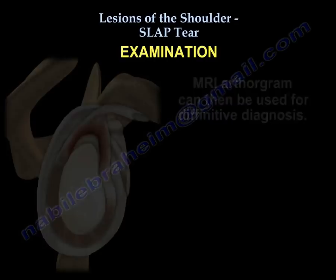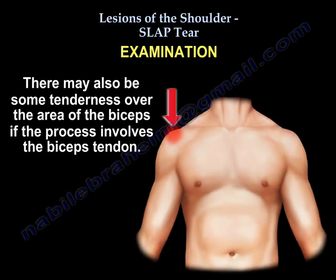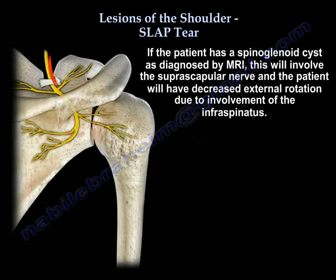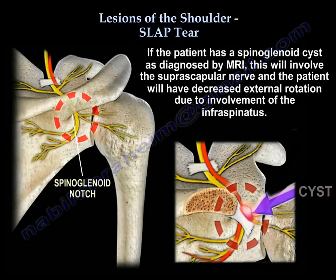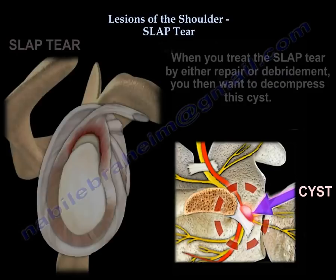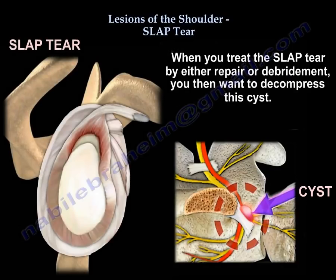You may also find tenderness over the biceps if the process involves the biceps tendon. If the patient has a spinoglenoid cyst as diagnosed by MRI, that will involve the suprascapular nerve, and the patient will have decreased external rotation due to involvement of the infraspinatus. When you treat the SLAP tear by repair or debridement, you want to decompress that cyst.